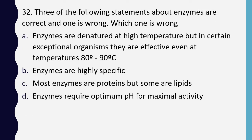Question 32. Three of the following statements about enzymes are correct and one is wrong. Which one is wrong? Enzymes are denatured at high temperature but in certain exceptional organisms they are effective even at 80–90°C; enzymes are highly specific; most enzymes are proteins but some are lipids; or enzymes require optimum pH for maximal activity. Correct answer is option C: none of the enzymes are lipids.